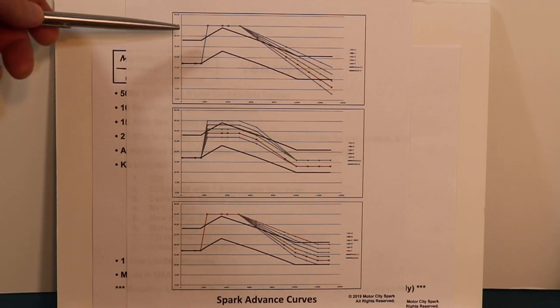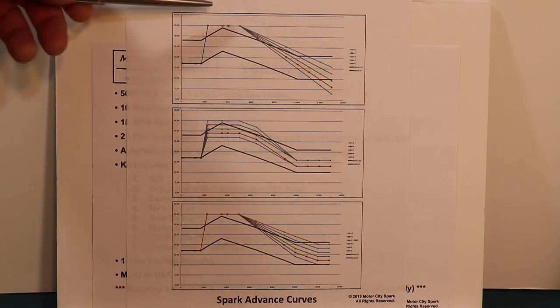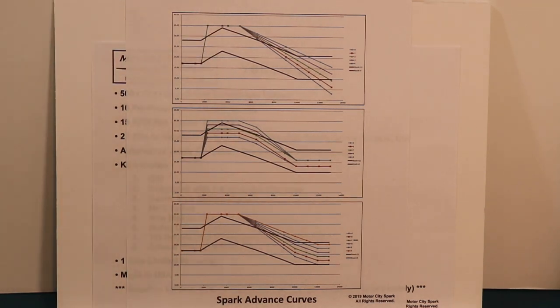If you retard the plate to plus 10, all the curves shift down by one. So this is the most spark you can get, but you can always reduce those curves.